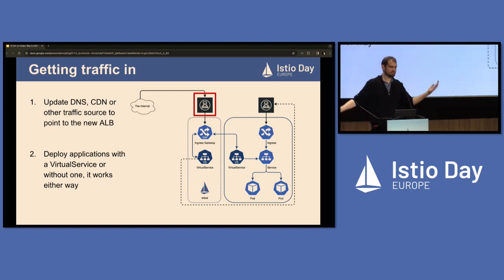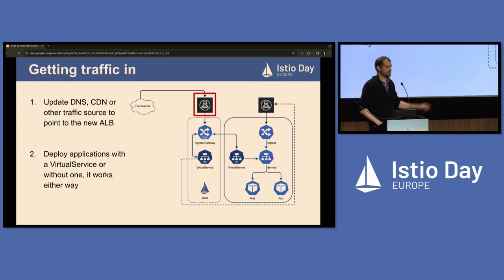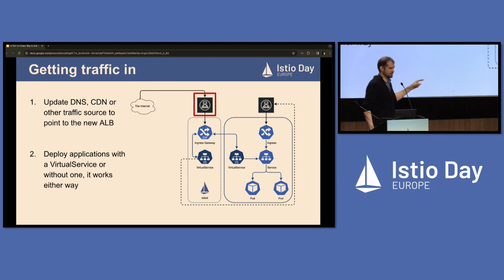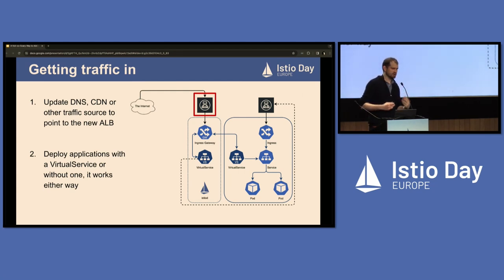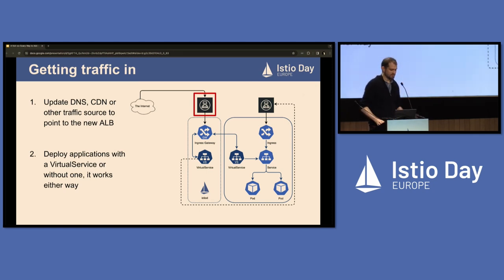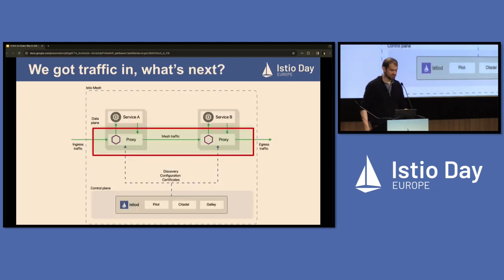At that point you can in theory connect the internet to your new load balancer and everything keeps working — you've essentially transferred all your traffic over without noticing any changes. Any traffic not captured by a virtual service gets an extra hop: into the new load balancer, into your ingress gateway, to the wildcard virtual service, and then back to the old load balancer. For latency-sensitive cases where two milliseconds extra is really bad, this specific approach won't work. But in a lot of cases it'll definitely work.